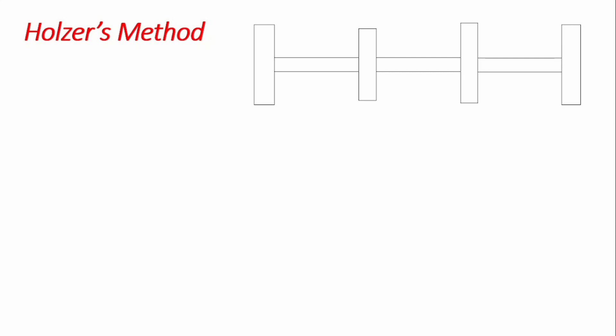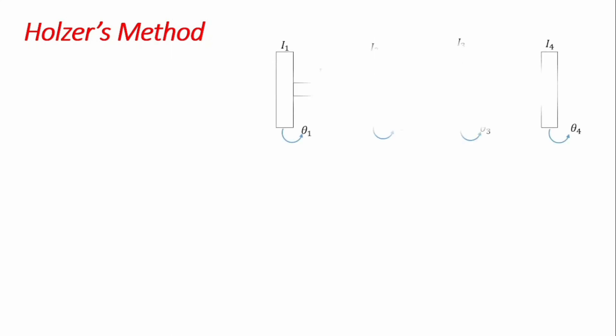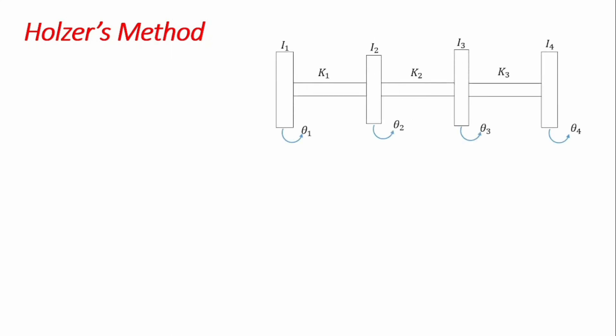We're going to use this simple system to derive some formulations that are applied in Holzer's method. We'll start by looking at this system, which is a four degree of freedom system having four generalized coordinates: theta one, theta two, theta three, and theta four. I is the moment of inertia, k is the torsional stiffness of the system, and theta is the angular displacement, or what we'll term generalized displacement.